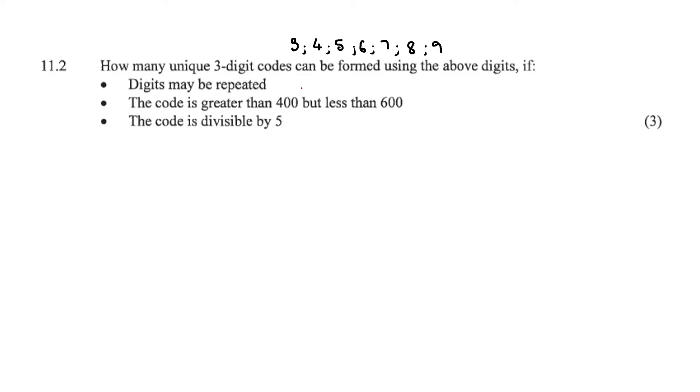This is a two-part question. There was an 11.1 and these were the digits that we had. How many unique three-digit codes can be formed using the above digits? These are the above digits. If the digits may be repeated, the code is greater than 400 but less than 600, and the code is divisible by 5.